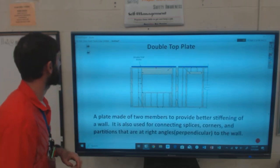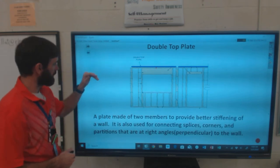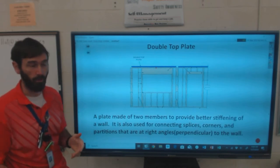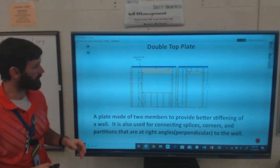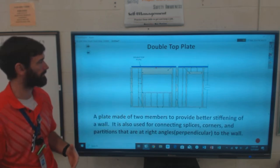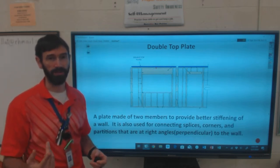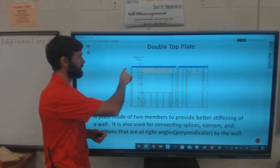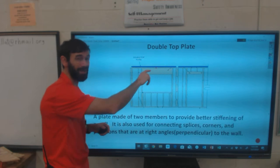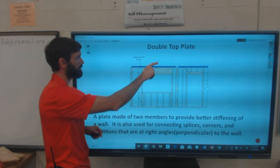Double top plate is our next component. It is a plate made of two members to provide better stiffening of the wall. It's also used to connect splices and corners and partitions that are at right angles or perpendicular to a wall. If you remember back to our first video, I was talking about top plates and I specifically said notice there's another board on top of that. That's our double top plate, highlighted in blue here.